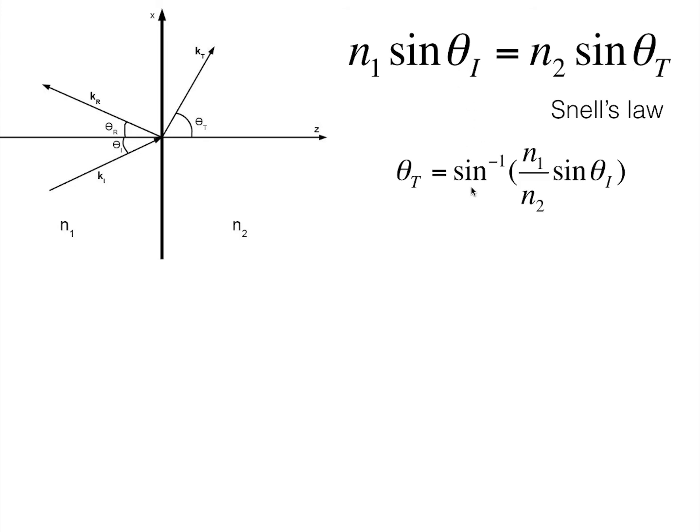On rearranging this, we get theta t is sine inverse of n1 by n2 sine theta i. But there's something absurd with this relation. What if the thing inside the bracket n1 by n2 sine theta i, what if it's greater than 1? Sine inverse cannot take arguments which are greater than 1.